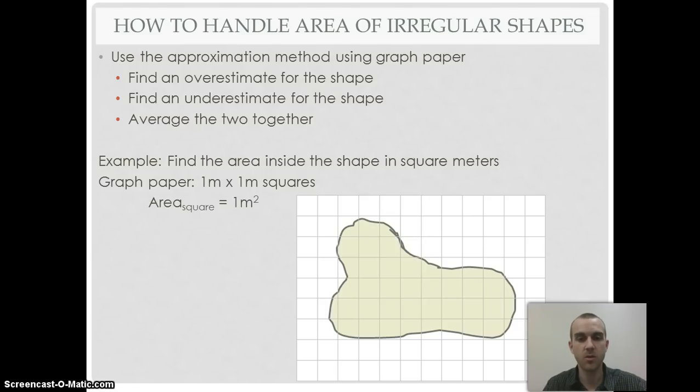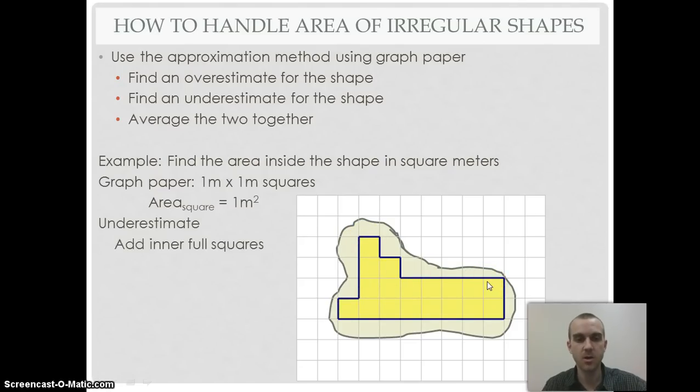Now I can do my underestimate. I'm looking for all the full squares inside—no partial squares, just full squares—and I add them together. When I do that, I get 18 squares. Since each is a square meter, that's 18 square meters for my underestimate.